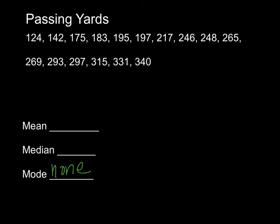Let's move to the median — the middle number. We have 16 data points, so we're going to count over to the middle. Half of 16 is 8, so counting 1 through 8, our median falls right in between the 246 and the 248. When there is no exact middle because we have an even number of data points, we take the mean of those two points. So the point in between 246 and 248 is 247.